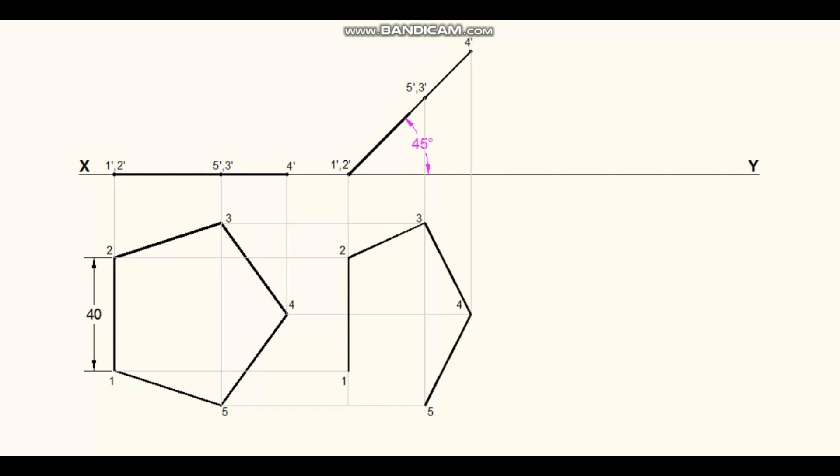Since one edge of the lamina is inclined to VP, the edge 1 to 2, which is now perpendicular to HP, can be tilted for the given angle.